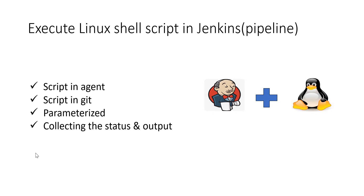Here we will consider four scenarios: how to execute a script which is present in the Jenkins agent, how to execute a script which is present in a version control tool like Git, how to send parameters to the shell script executed as part of Jenkins Pipeline, and how to collect the status and output of the shell script in the Jenkins Pipeline. Let us start.